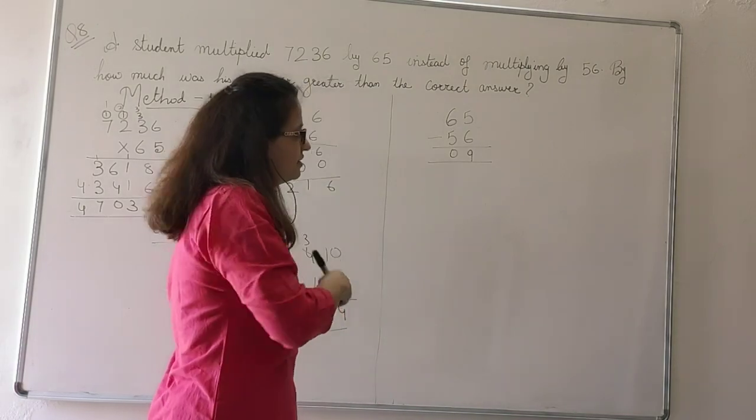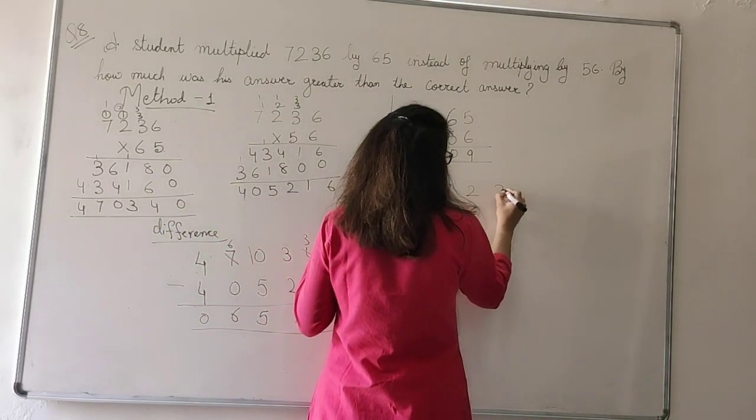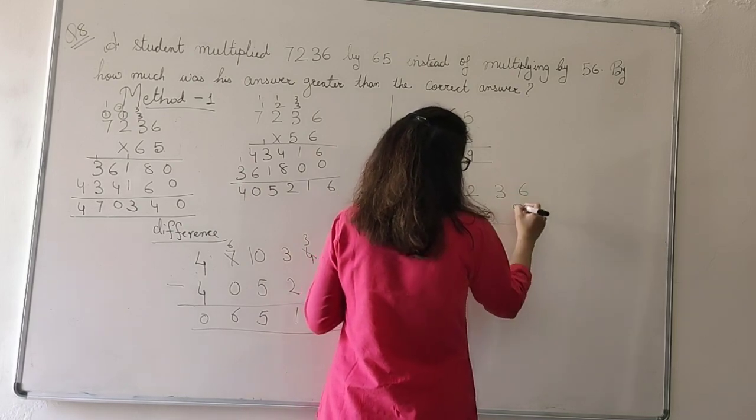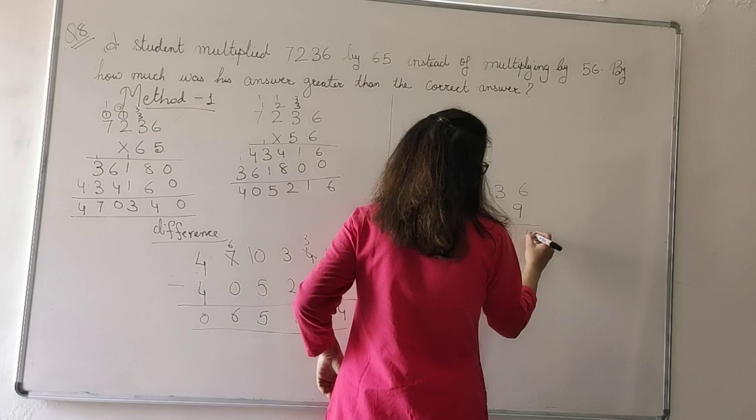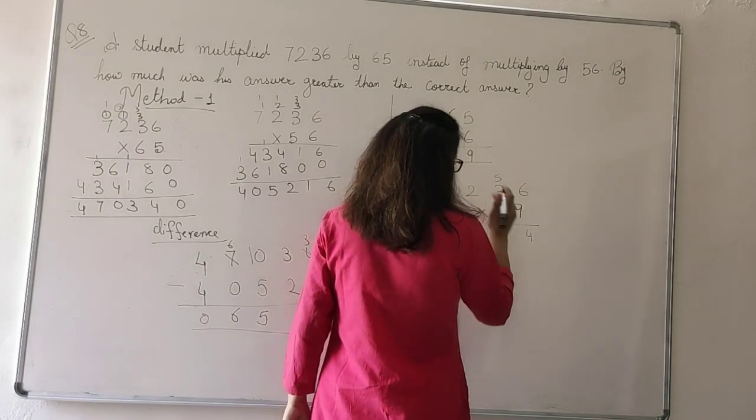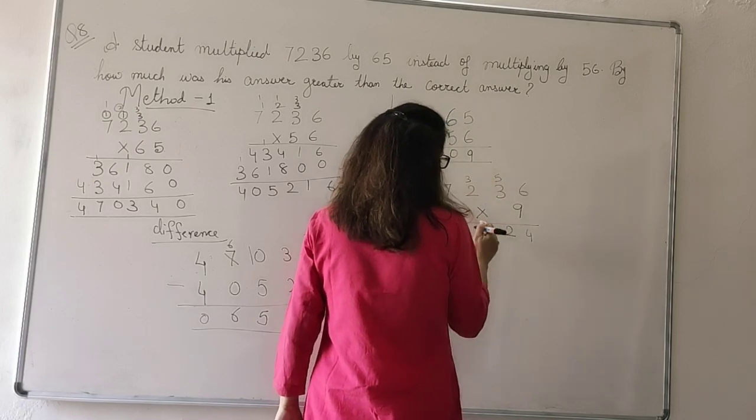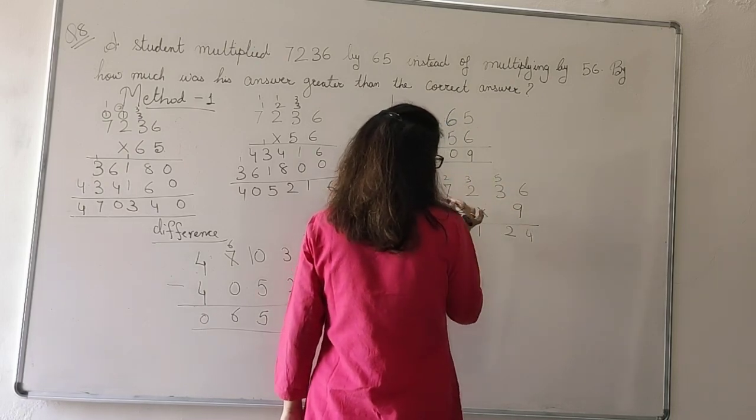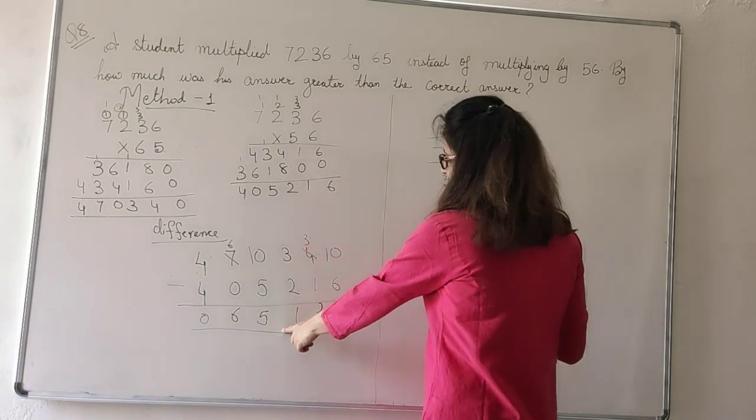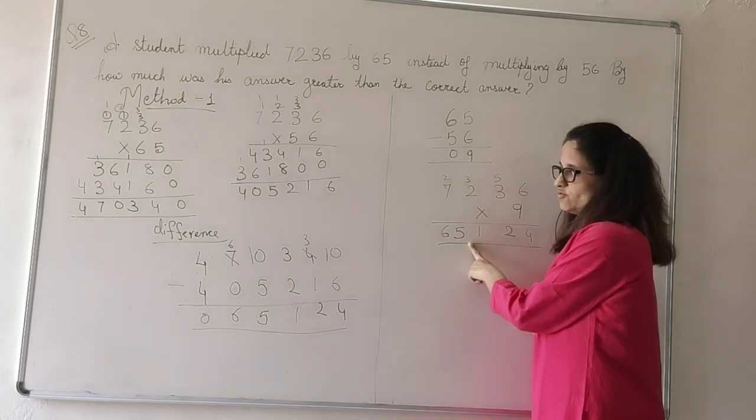And if I directly multiply 7236 by 9: 9, 6, 54, 54. 9, 3's are 27, 32. 9, 2's are 18, 21. 9, 7's are 63, 65. So you got 65, 124.